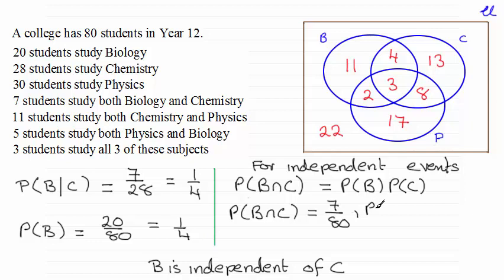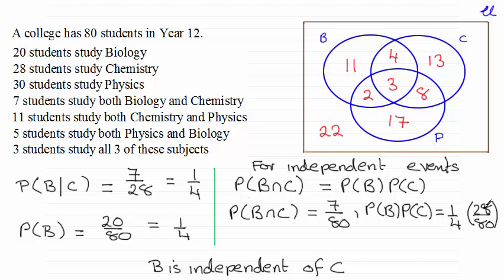Now let's look at the probability of B times the probability of C and see what value we get. The probability of B we've seen is 20 out of 80, or a quarter. And the probability of a student doing chemistry is 28 out of a total of 80. So you've got a quarter times 28 out of 80. If you do a quarter of 28, that cancels down — you end up with 7 out of 80. That matches up with the probability of B intersection C, which is also 7 out of 80. So therefore, by this rule, they are independent — B is independent of C.